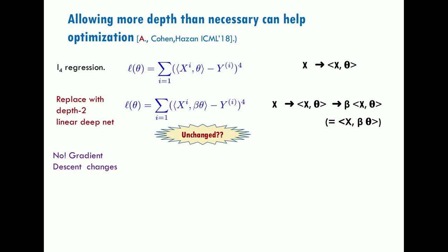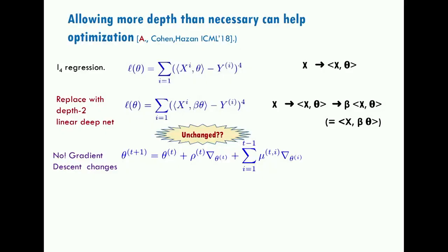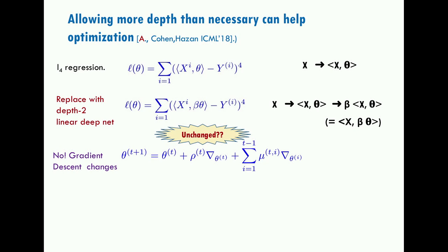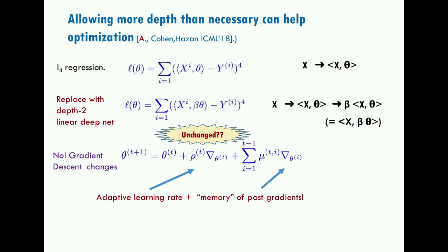Computing the gradient in this new two-layer parameterization and interpreting it as a movement in the original theta landscape reveals that the effective update uses not just the current gradient but also past gradients with time-varying coefficients. This gives it features of more advanced algorithms like momentum or acceleration — in fact it outperforms some of these in experiments.